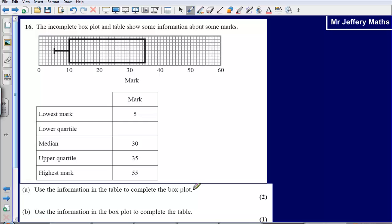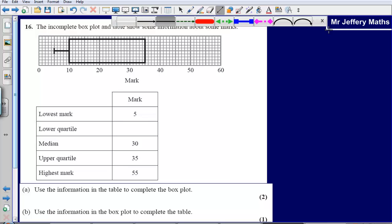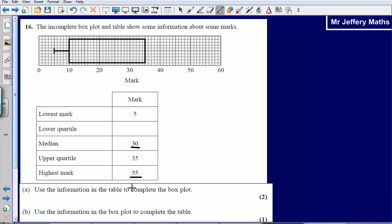Question A says use the information in the table to complete the box plot. So first of all, what we're going to need to do is recognize what parts are missing from our box plot diagram. Well, the first thing I can spot that we're missing is the median and we're also missing the highest mark.